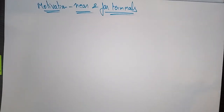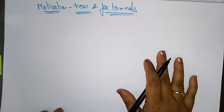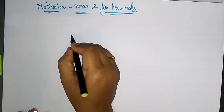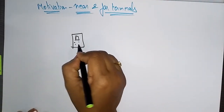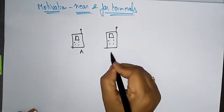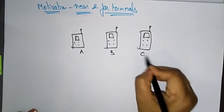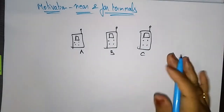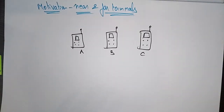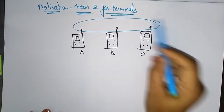Moving to the next topic: the motivation for near and far terminals. We have seen the motivation for the specialized MAC, hidden terminals, and exposure terminals. Now let's look at near and far terminals. Consider three mobile devices: A, B, and C. A and B are both sending with the same transmission power, and all three devices are connected within range.